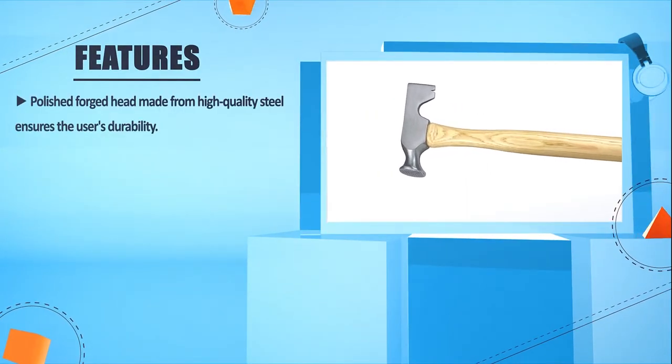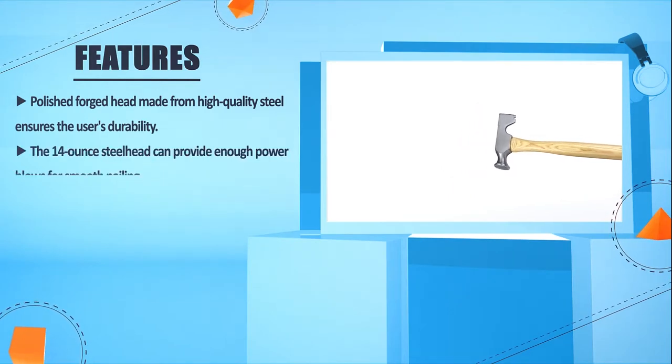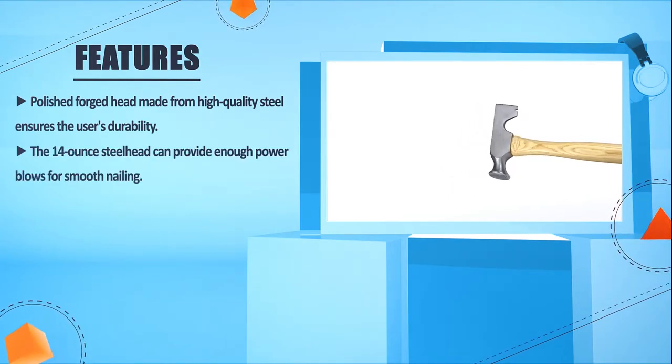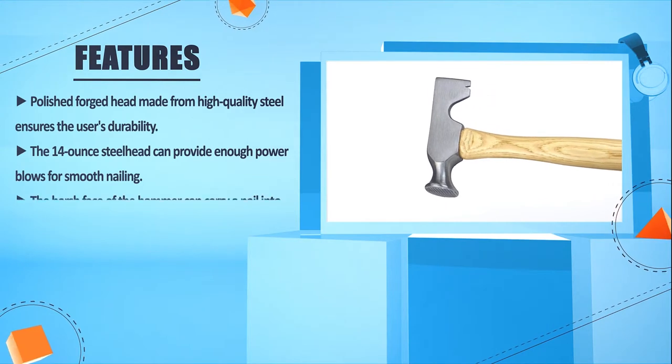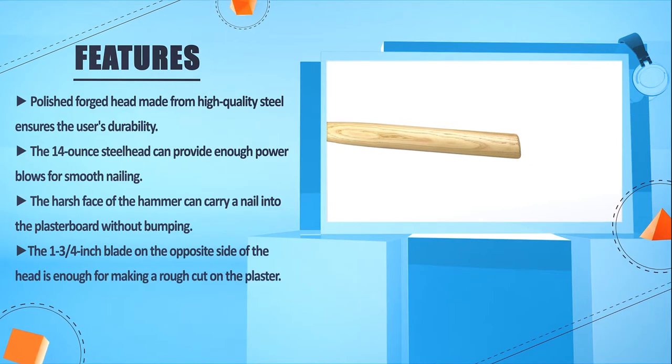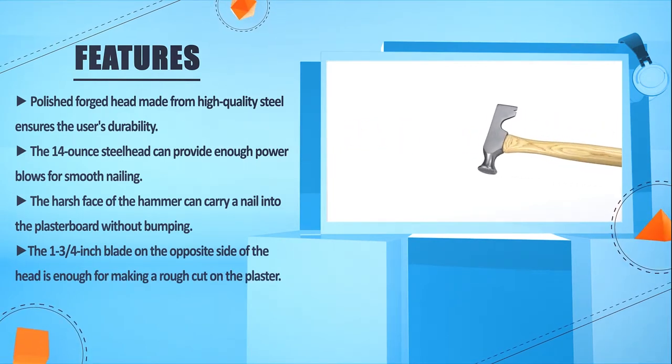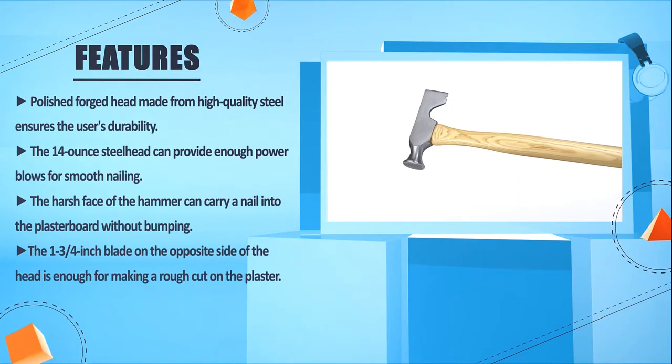Polished forged head made from high quality steel ensures the user's durability. The 14 oz steel head can provide enough power blows for smooth nailing. The harsh face of the hammer can carry a nail into the plaster board without bumping. The 1¾ inch blade on the opposite side of the head is enough for making a rough cut on the plaster.